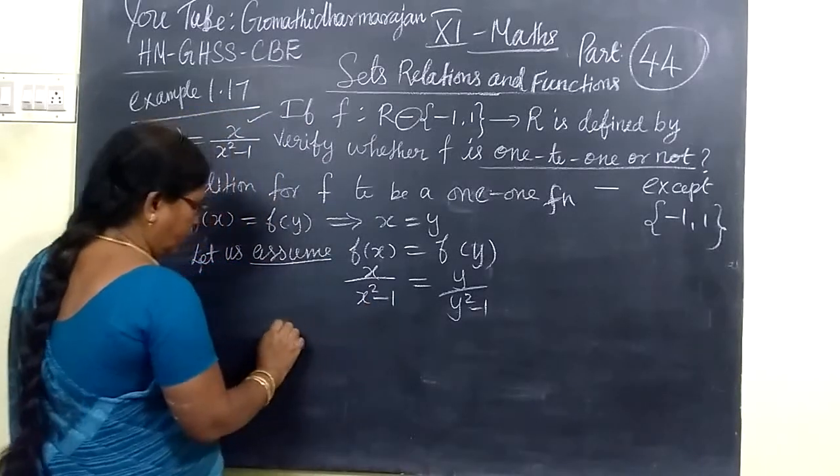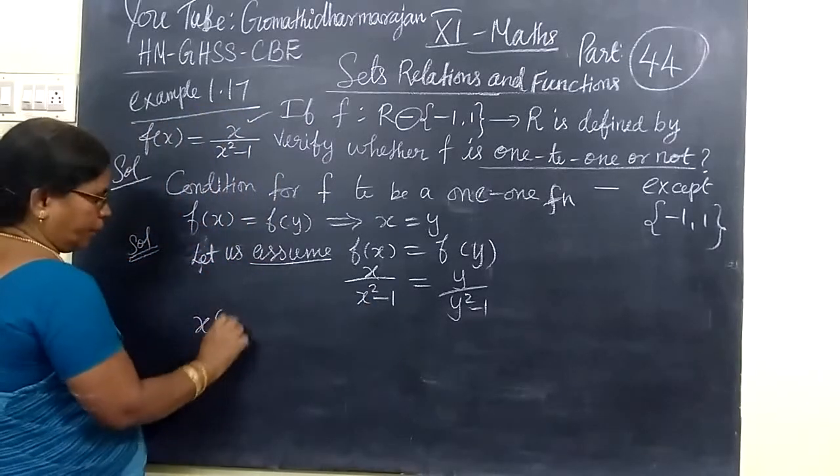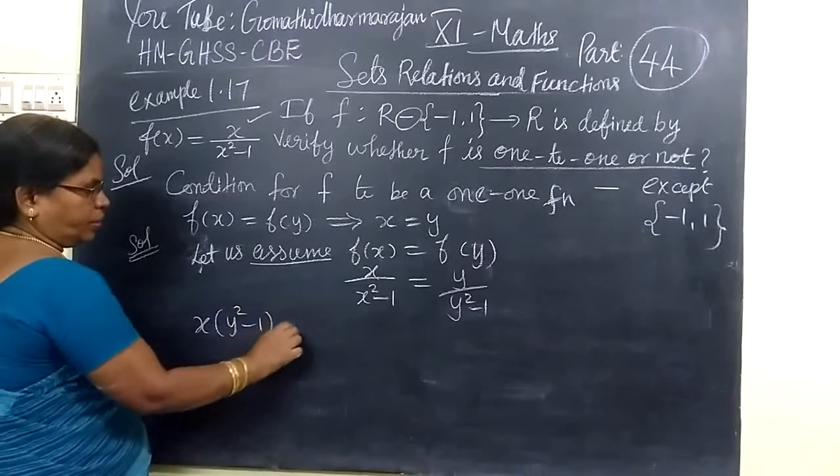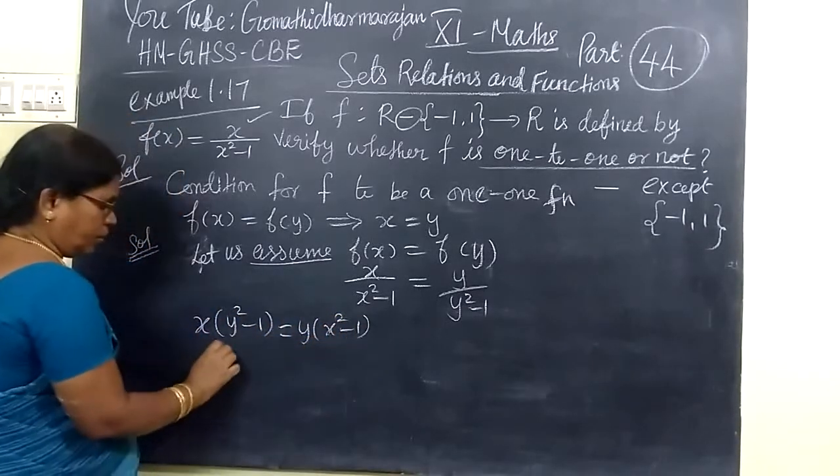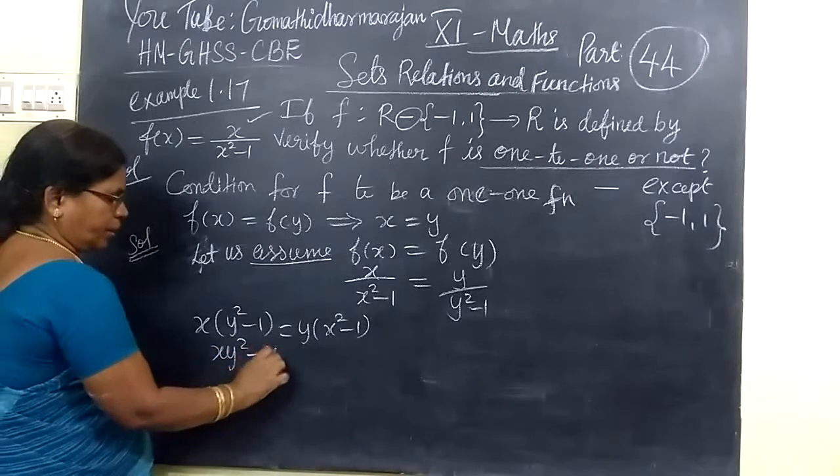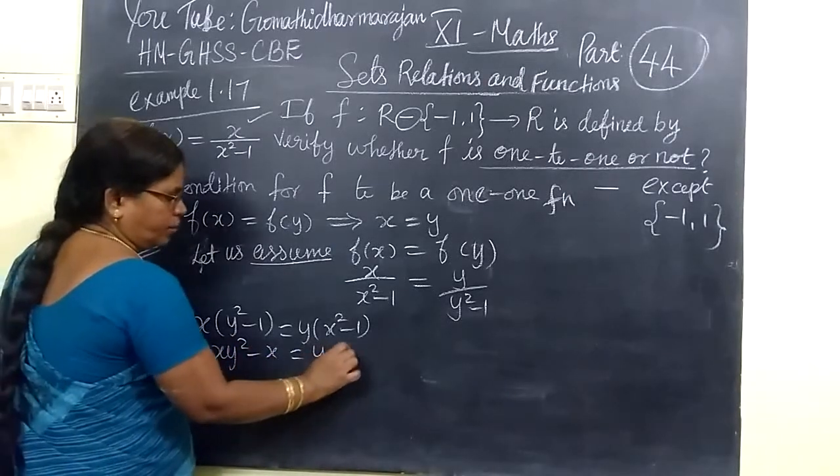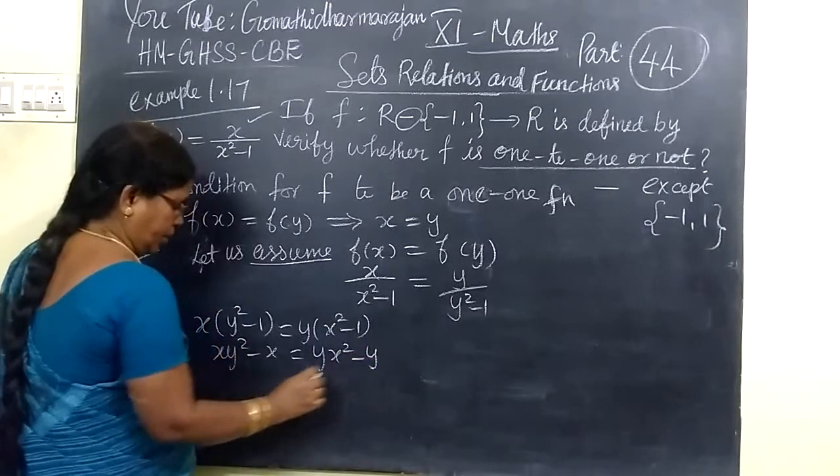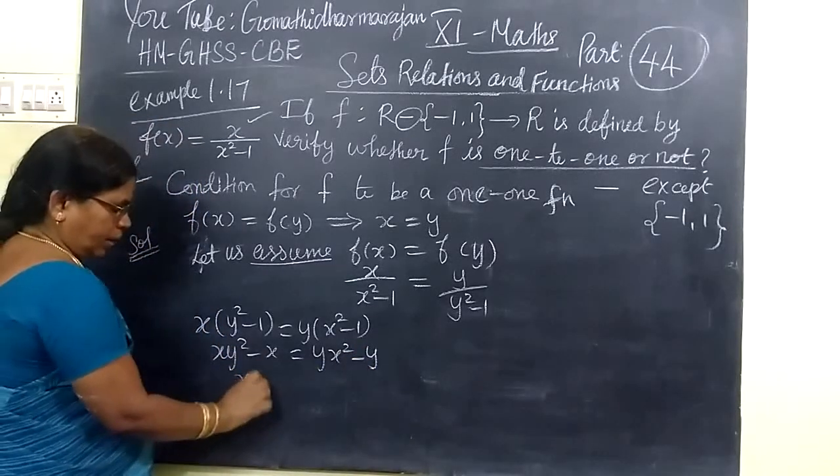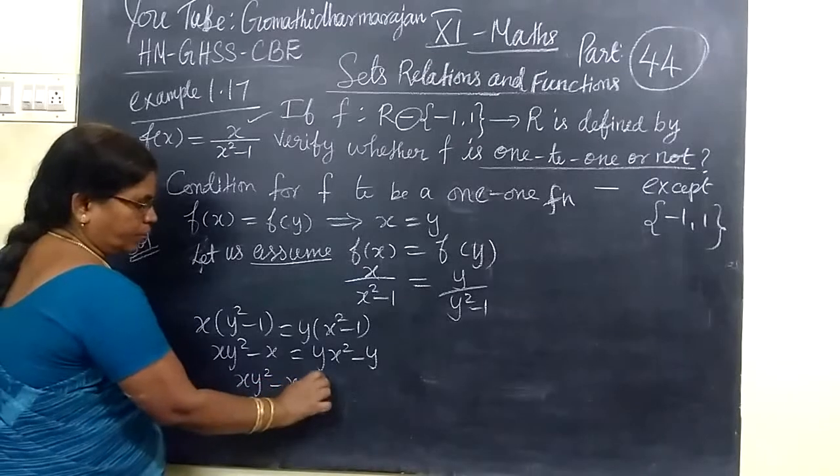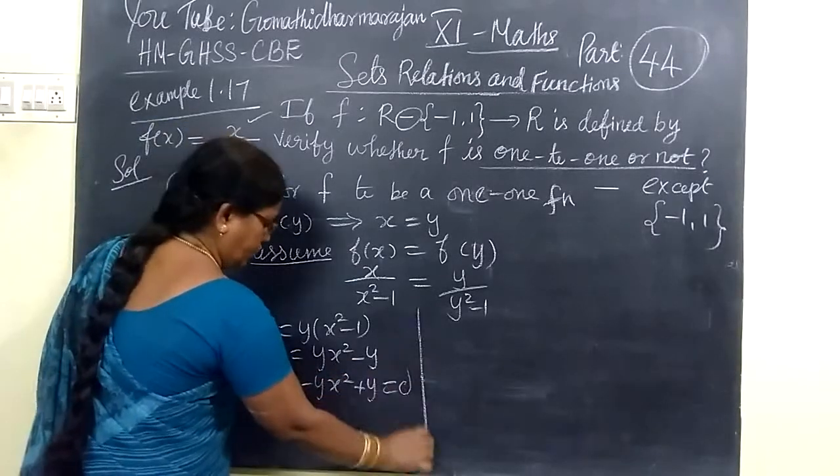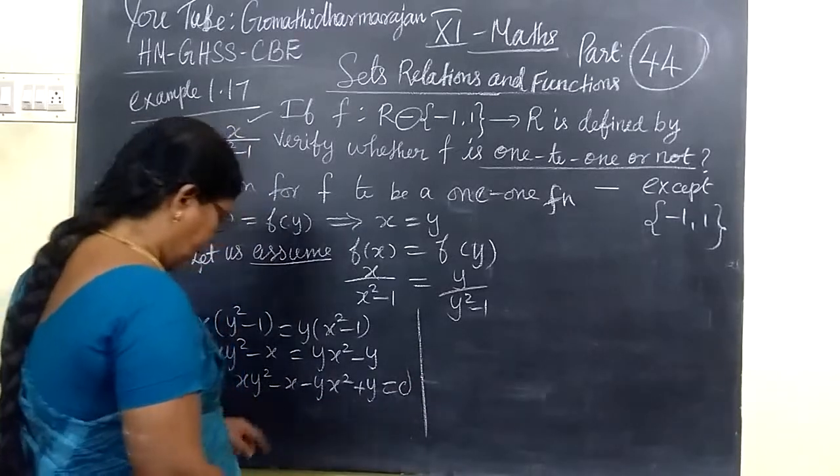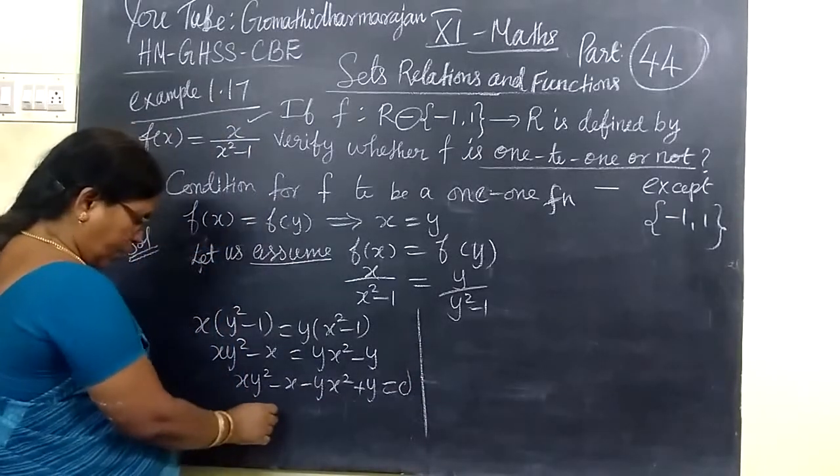If you cross multiply, you get x₁(x₂²-1) equals x₂(x₁²-1). So x₁x₂² - x₁ equals x₂x₁² - x₂. You can take xy common.